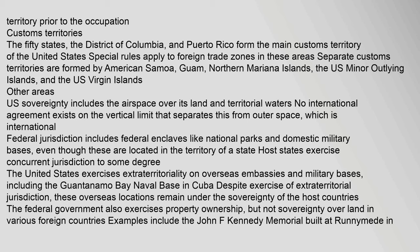The 50 states, the District of Columbia, and Puerto Rico form the main customs territory of the United States. Special rules apply to foreign trade zones in these areas. Separate customs territories are formed by American Samoa, Guam, Northern Mariana Islands, the U.S. Minor Outlying Islands, and the U.S. Virgin Islands.